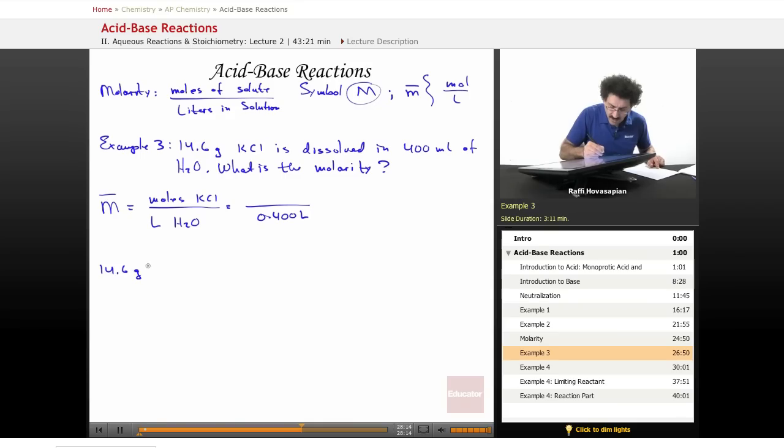14.6 grams of KCl times one mole—it happens to weigh 74.55 grams. And when you do that division, you end up with 0.1958 mole of KCl. This is the number that goes up there.